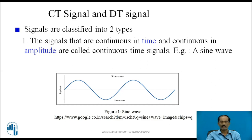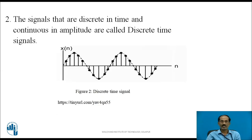In discrete time signals, signal amplitude is present only at discrete intervals of time. Signals that are discrete in time and continuous in amplitude are called discrete time signals. Along the x-axis it is n, and along the y-axis it is x[n]. Continuous time signals are represented by x(t) versus t, whereas discrete time signals are represented by x[n] versus n, where n is an index. For every discrete value of n, you get a corresponding amplitude value x[n]. In contrast, for continuous time signals, t is continuous — meaning at every instant of time you get the signal x(t).